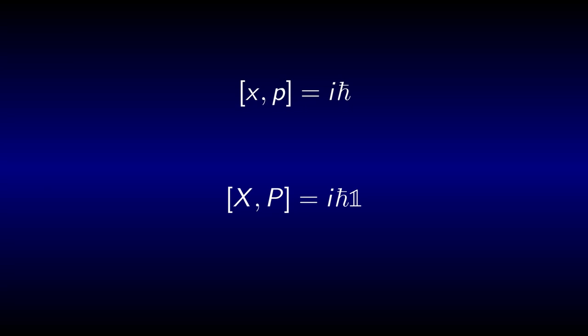Of course there are operators that commute. Take position and energy for example. The latter is represented by the Hamiltonian or, according to the Schrödinger equation, by i h-bar and the derivative with respect to time. The interpretation here is that the operators do not affect one another.